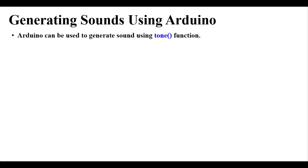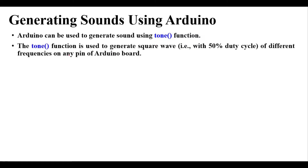In this video we are going to talk about generating sounds using Arduino. To generate sound using Arduino we can use a function called the tone function, which is available in Arduino itself. The Arduino library provides a tone function which can be used to generate sounds. The tone function is used to generate square waves — not sine waves — so the sound will not be very melodious, but will be like small toy sounds.